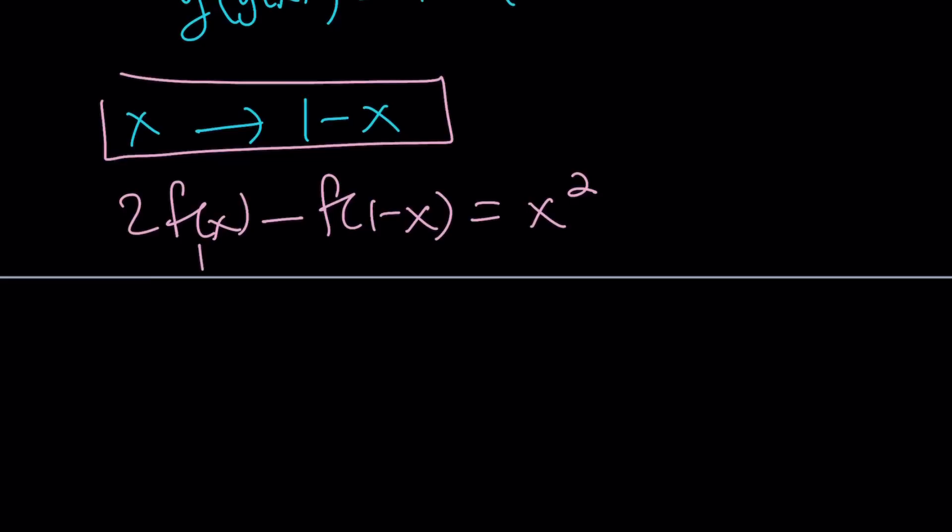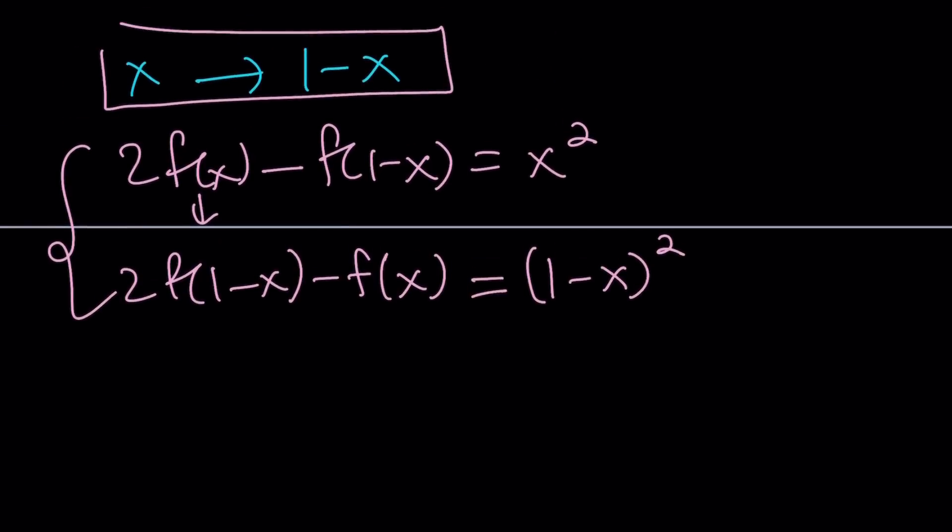So this becomes 2f(1-x), and this becomes f(1-(1-x)), but you already know that's going to become x because those functions are inverses. And the right-hand side is going to be (1-x)². Now I have two equations, so this becomes a system.